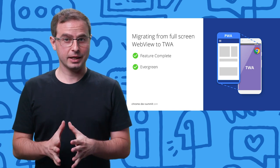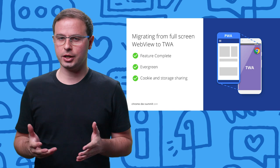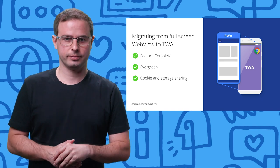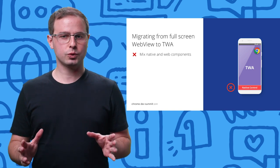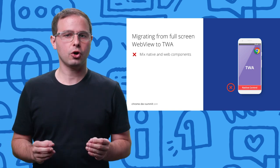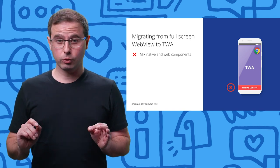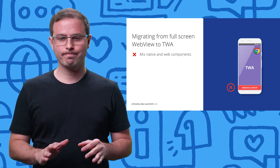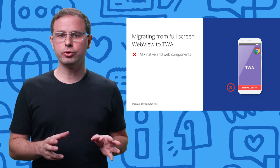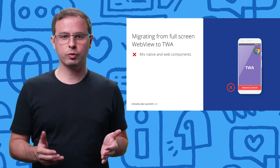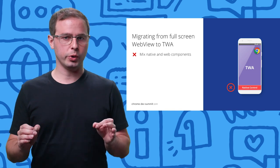Another important aspect is that, unlike a web view, the TWA can share storage and cookies with the main browser. At the moment, the main limitation of a TWA is that you can't mix web content with native controls on the same screen — for example, having a native toolbar at the bottom of a TWA is not possible. In cases like this, what you can do is recreate these native controls with web technology to provide the full web experience in TWA screens.